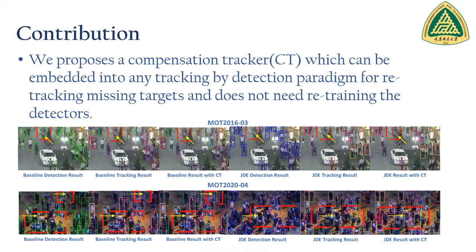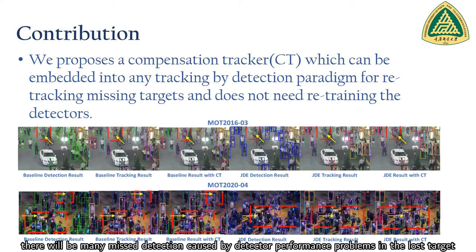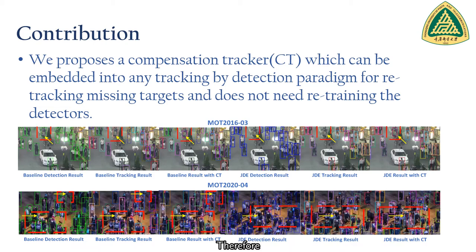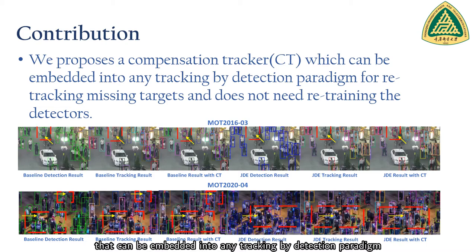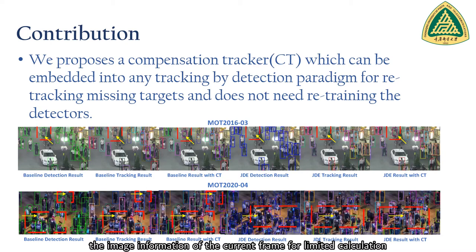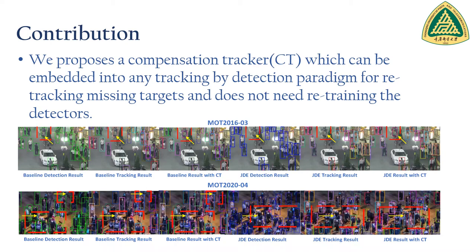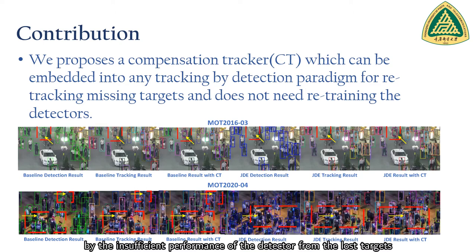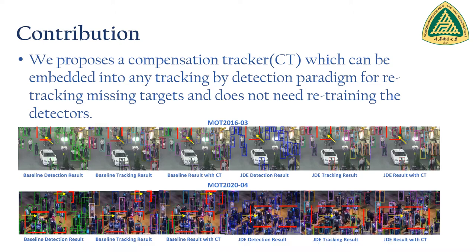According to that, there will be many missed detections caused by detector performance problems in the lost targets. Therefore, we propose a compensation tracker for lost targets that can be embedded into any tracking-by-detection paradigm. It mainly uses the historical information of lost objects and the image information of the current frame for limited calculation, selecting the missed detections caused by insufficient detector performance from the lost targets and outputting them to the tracking sequence.